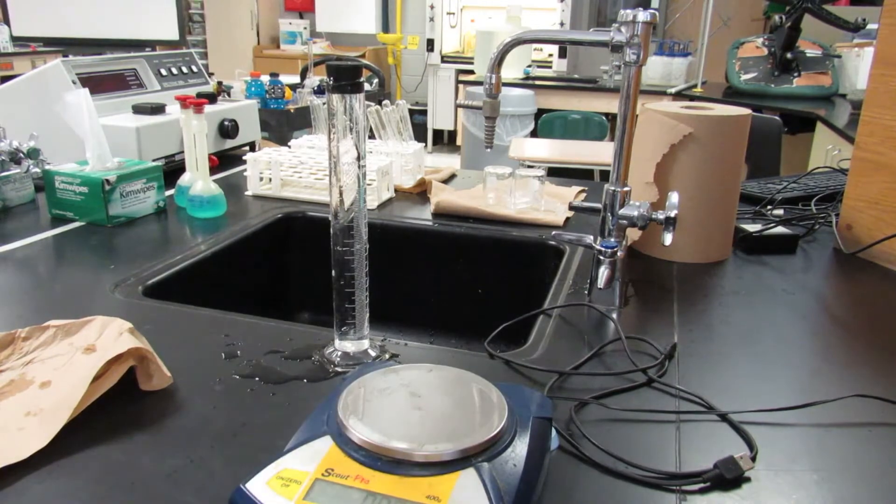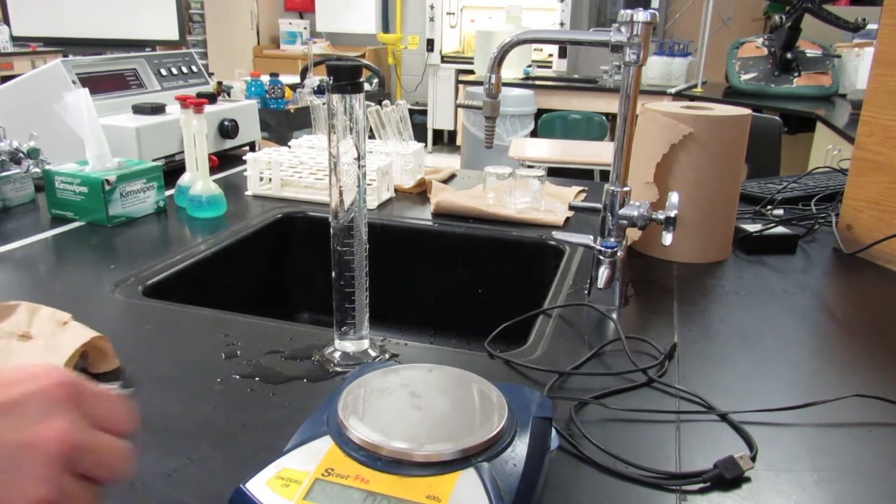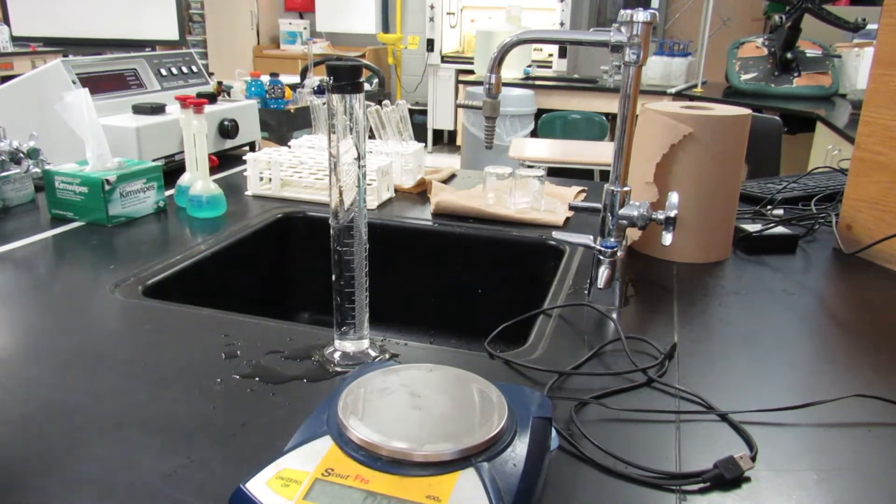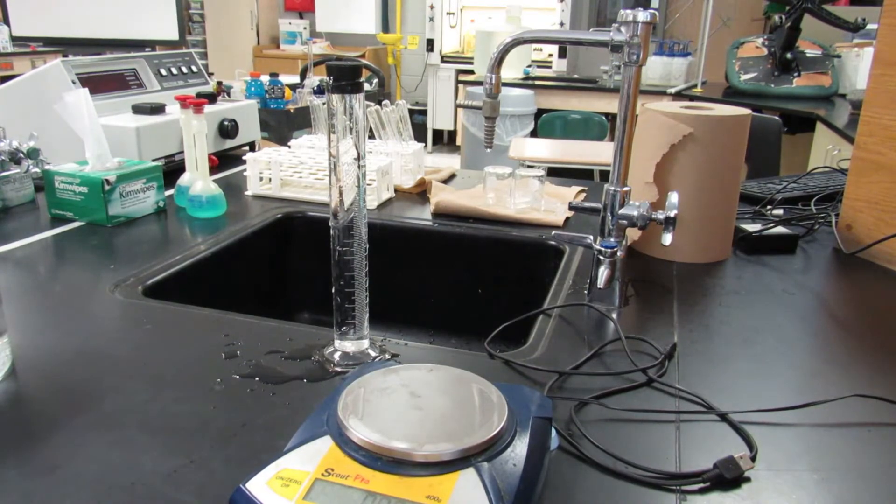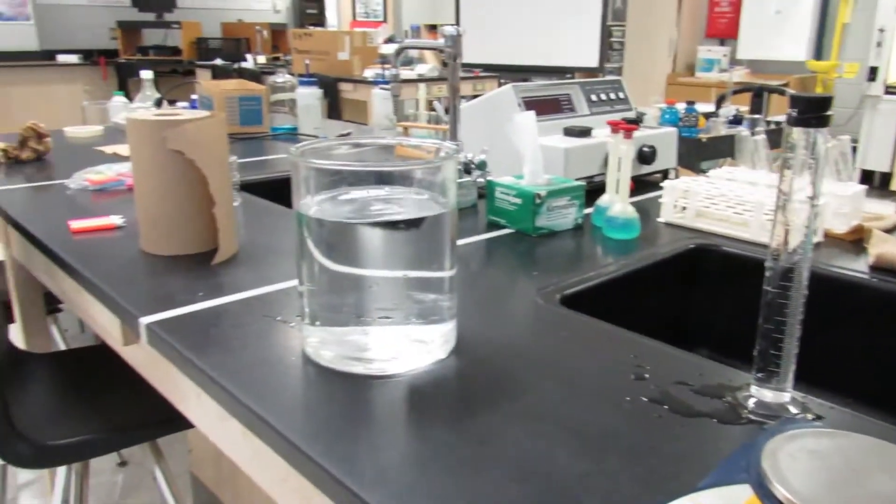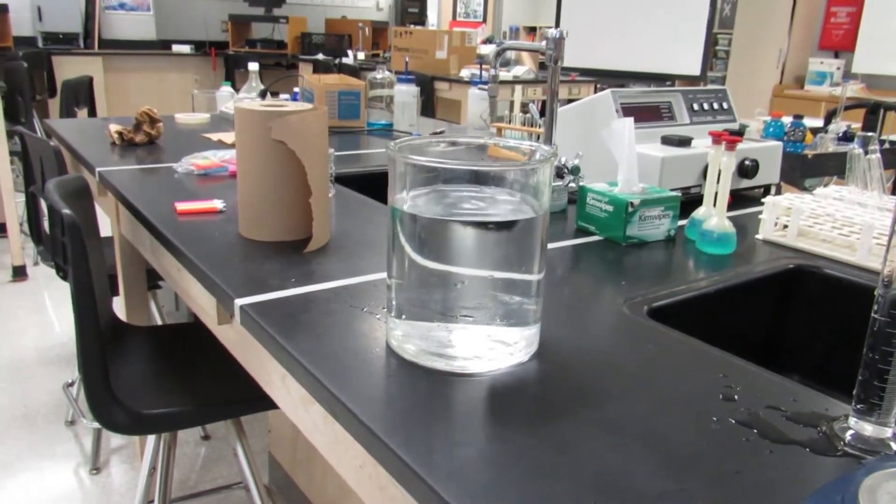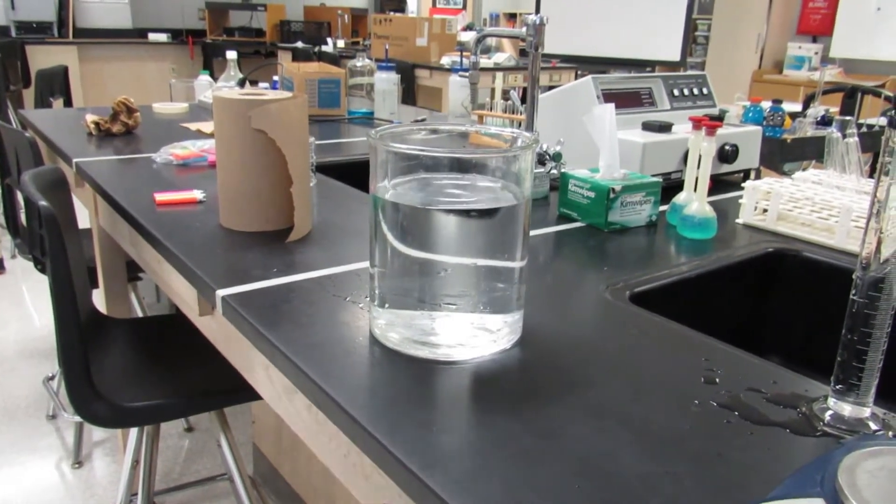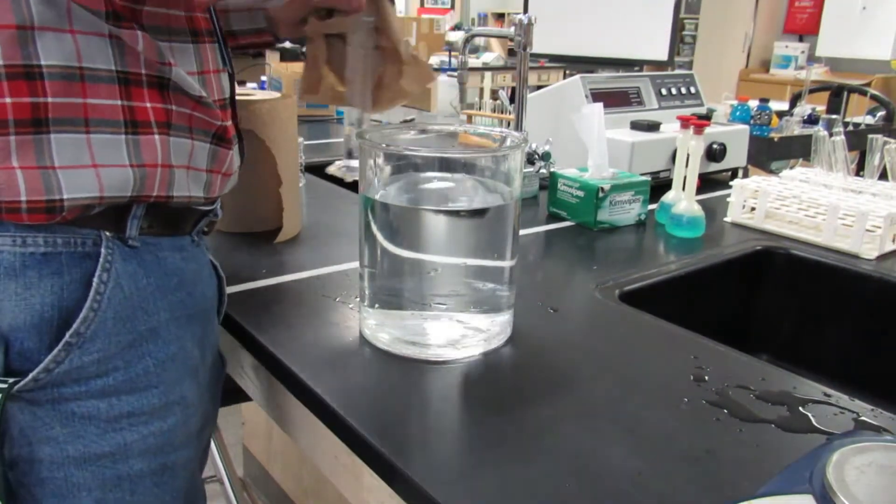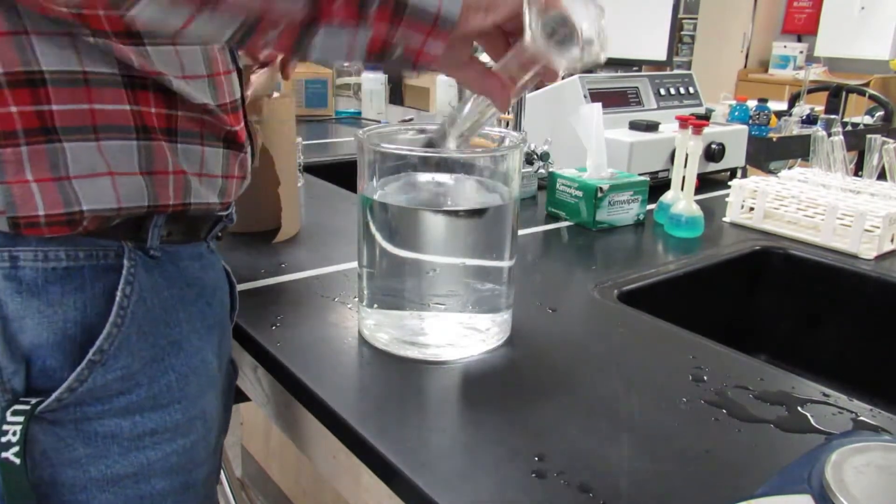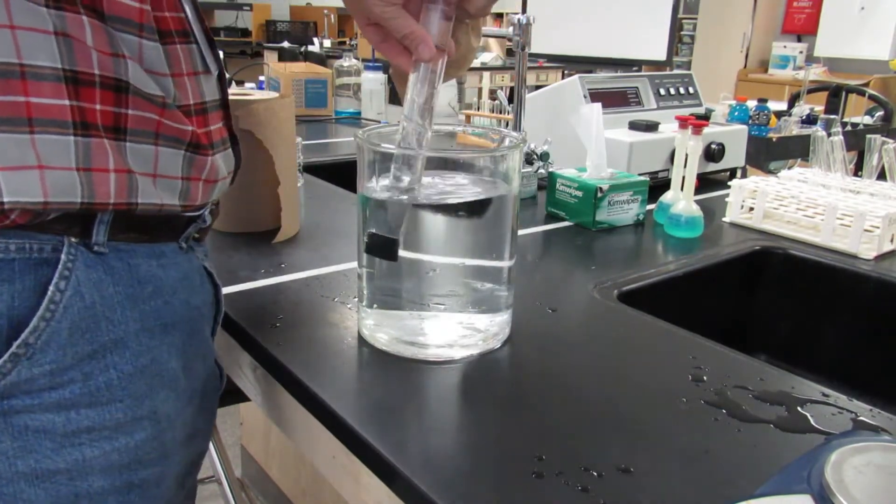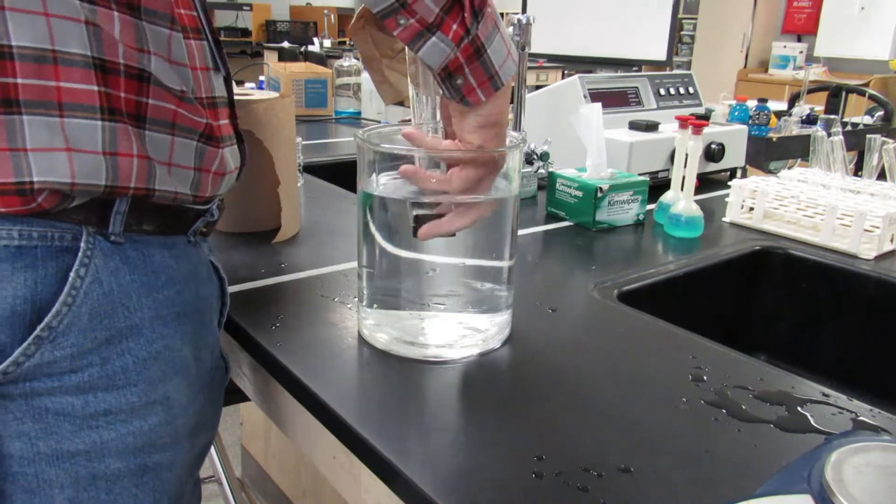Then we're going to take our battery jar and we're going to take our graduated cylinder we just filled with water, and we're going to flip it over into the battery jar quickly so that we don't get any air bubbles, and then remove the stopper.